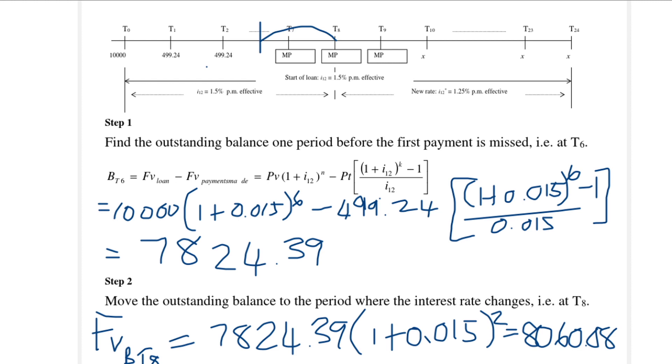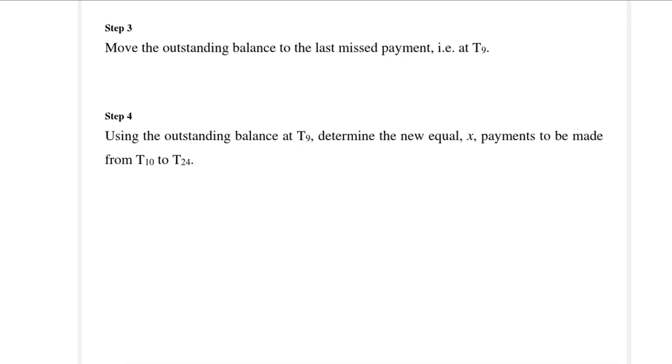Now from T8 we move to T9 and we're going to use the changed interest rate to move our outstanding balance one time period. The important thing to note here is that we are now working with the changed interest rate. So we use the new interest rate to get the balance at T9.